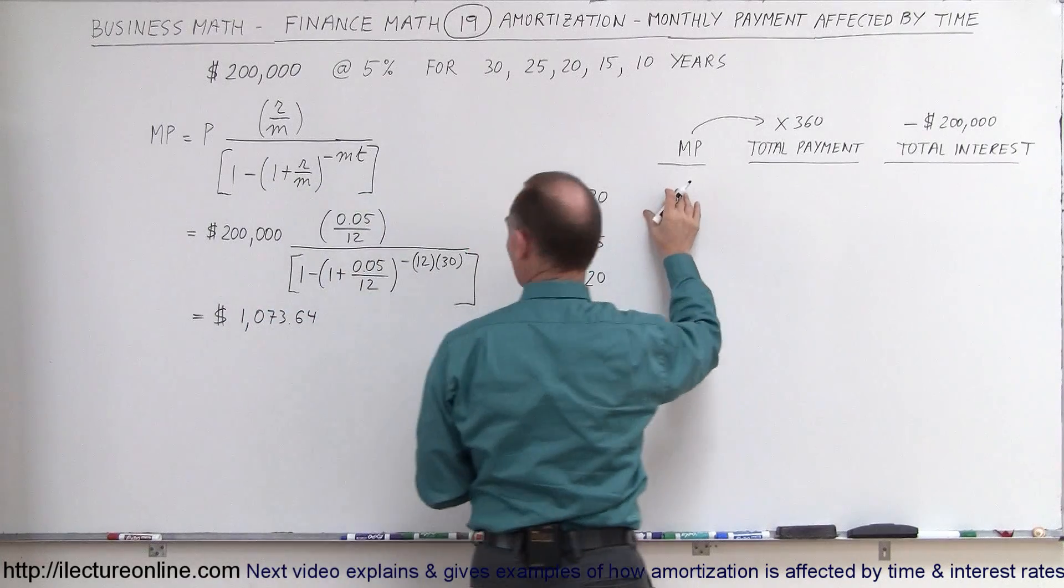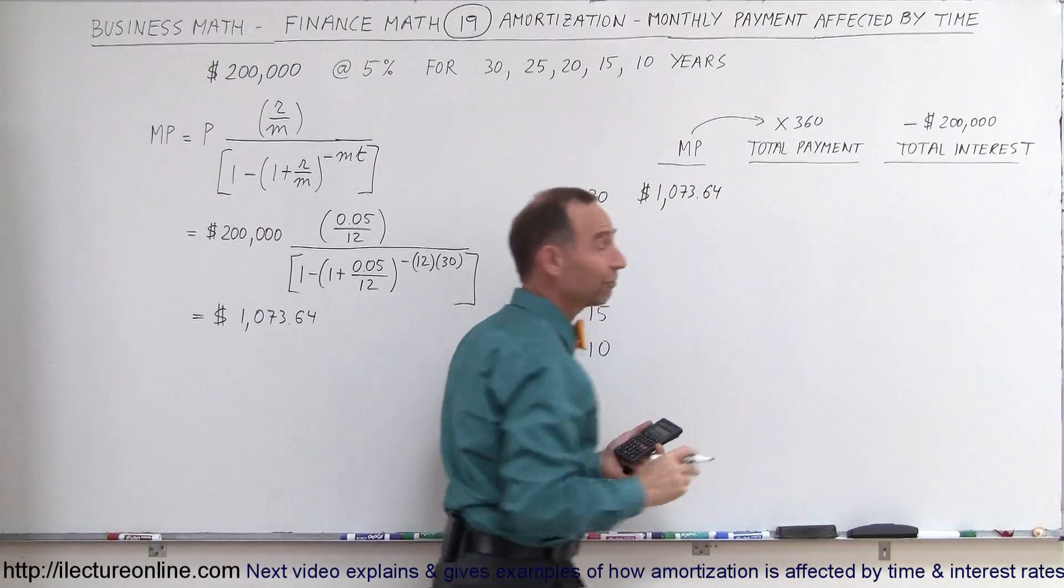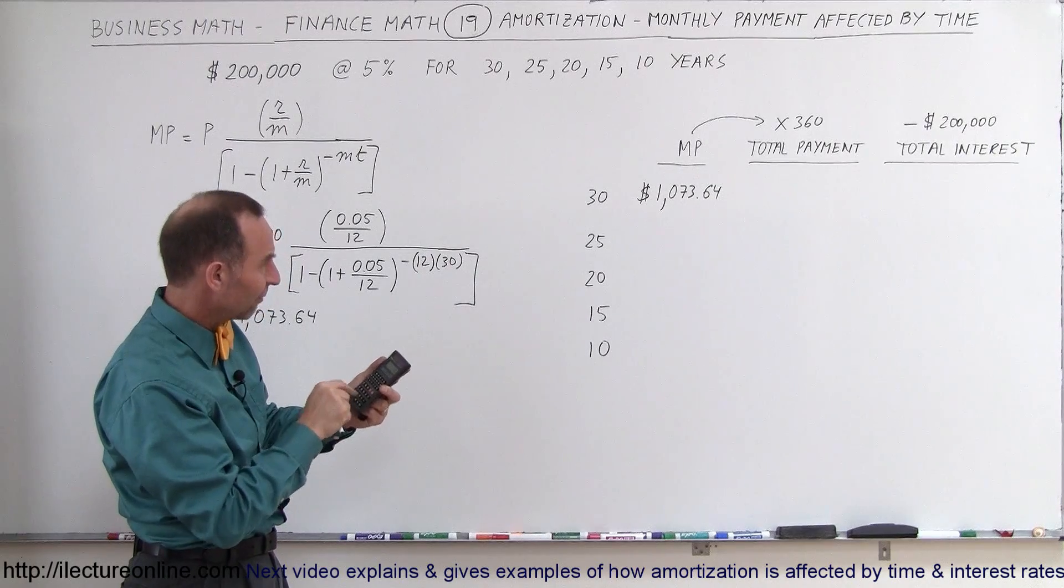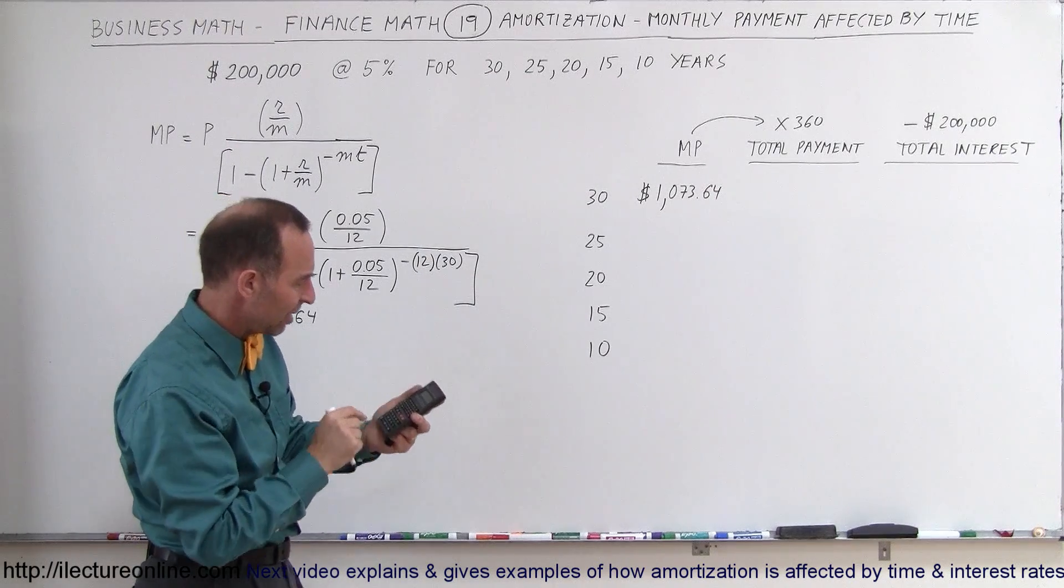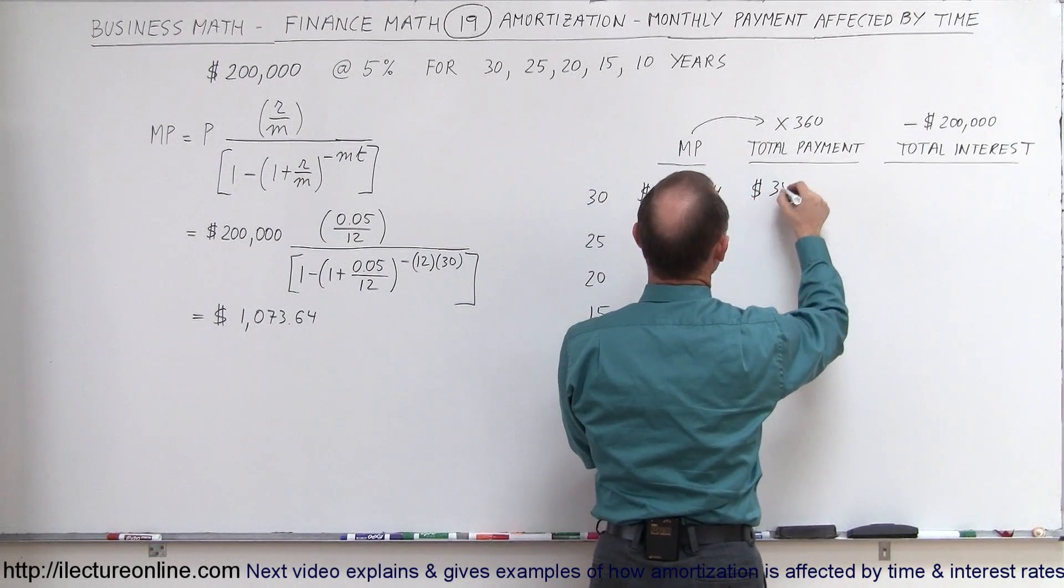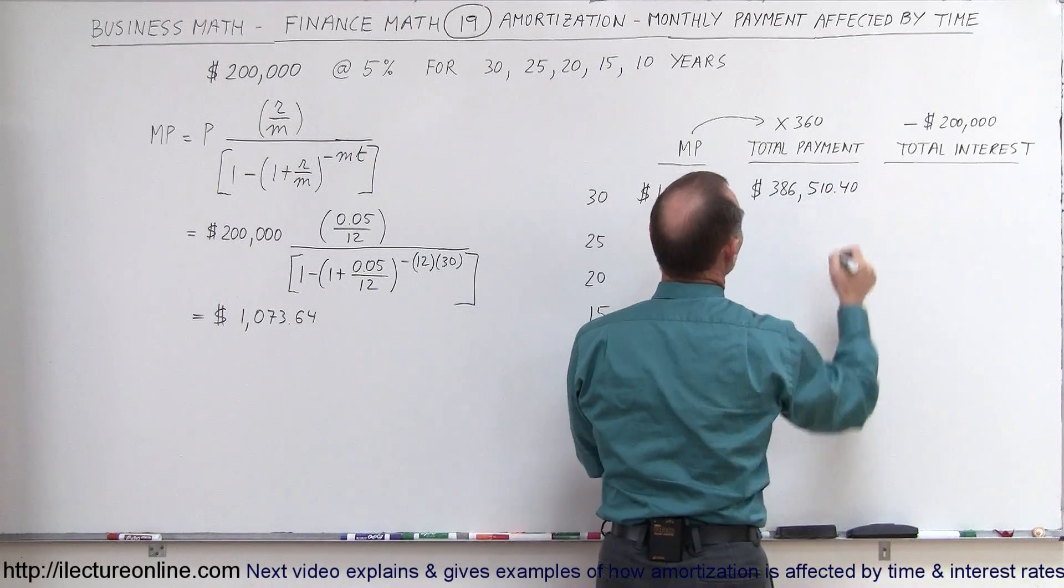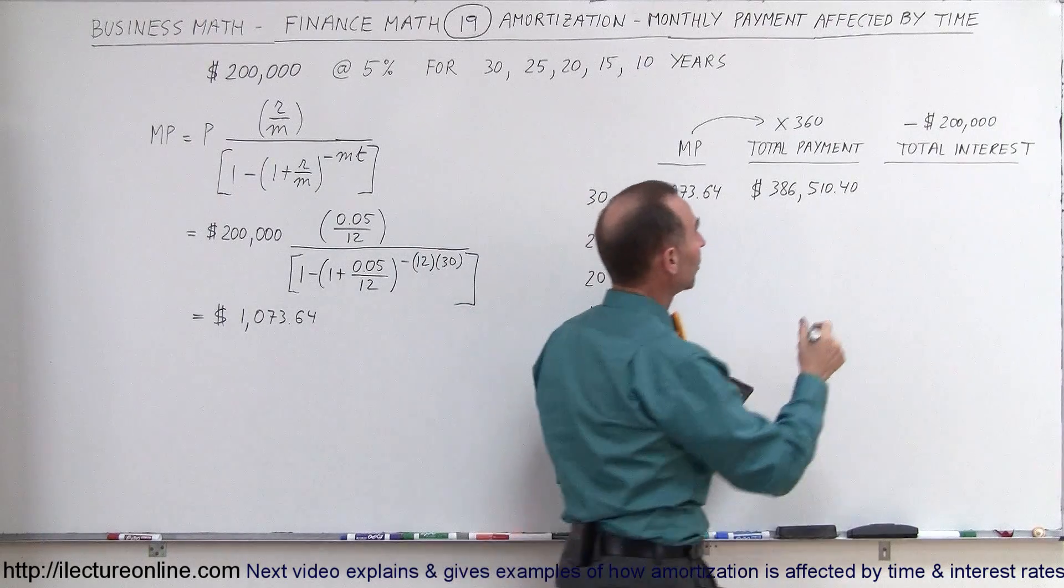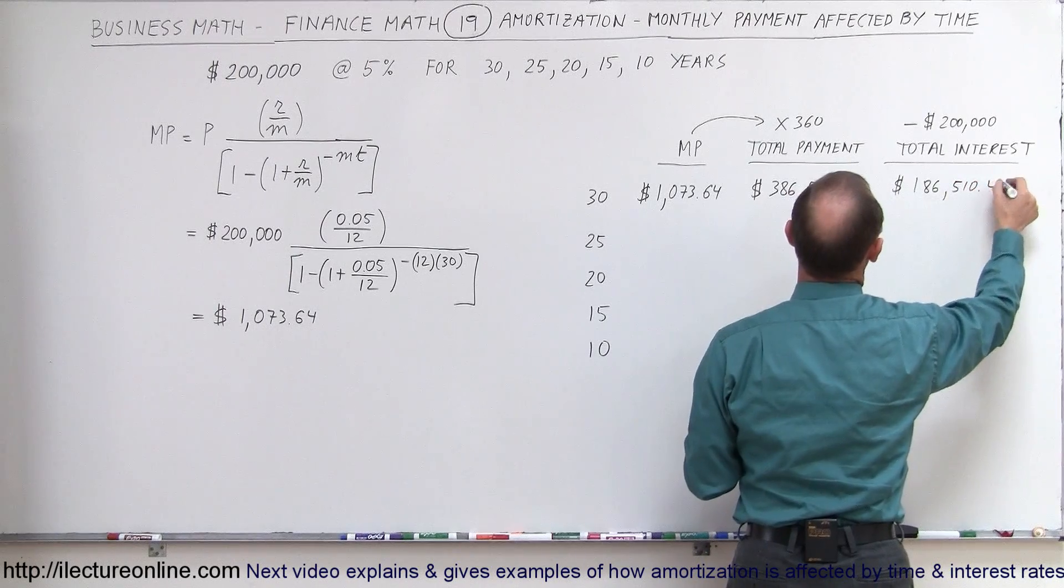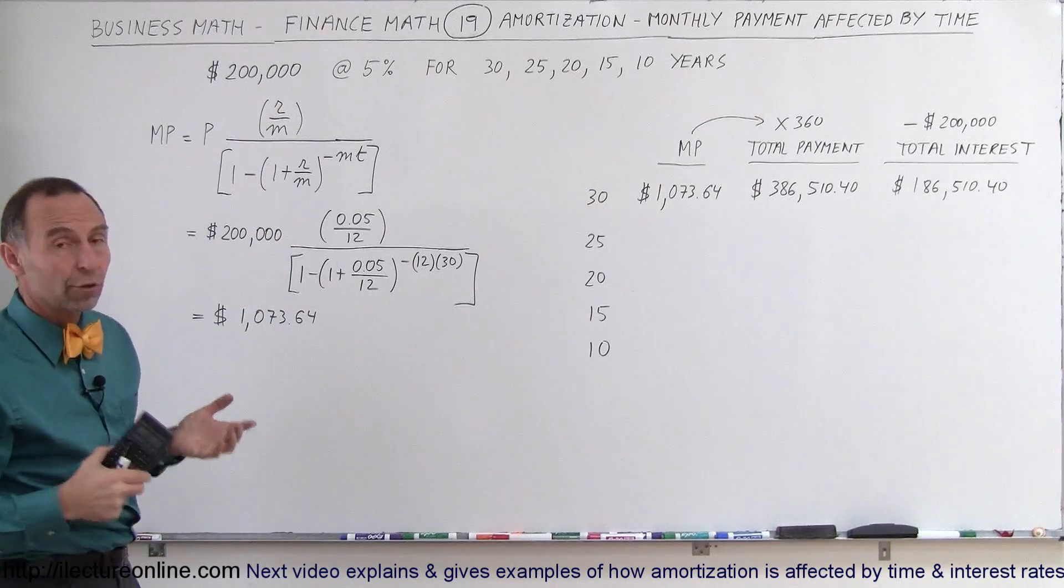So let's put that in here, monthly payment would be $1,073.64. So after 360 payments, how much money will you have paid back to the bank? $1,073.64 times 360, and so the total amount of money paid to the bank will be $386,510.40, and then if you subtract $200,000 from that, the total amount of interest paid to the bank would be $186,510.40. That would be your situation if you go for a 30-year loan.